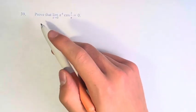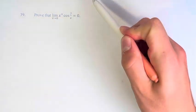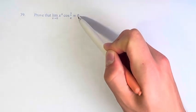Hello and welcome back to another video. In this problem, we're asked to prove that the limit as x approaches 0 of x to the fourth times cosine of 2 over x is equal to 0.